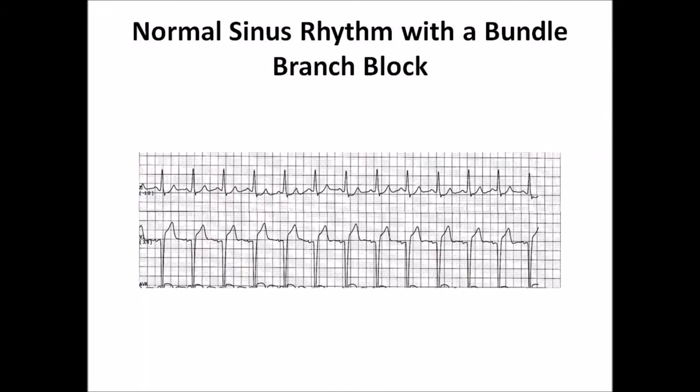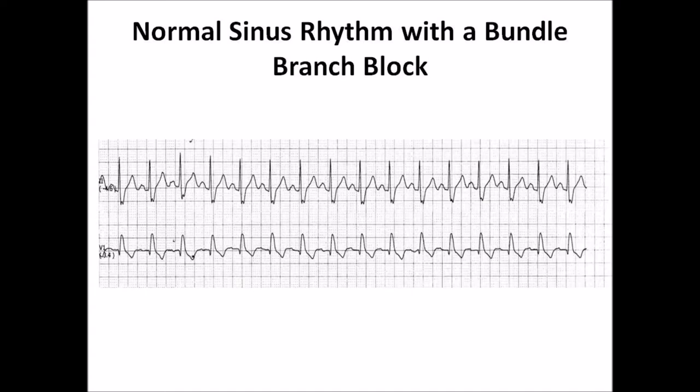The P wave is upright in lead 2 followed by a wide QRS with a QR pattern in V1, at a rate of about 75 beats per minute. This is another example of sinus rhythm with bundle branch block, with the P wave upright in lead 2 followed by a wide QRS and a QR pattern in V1, at a rate of about 93 beats per minute.